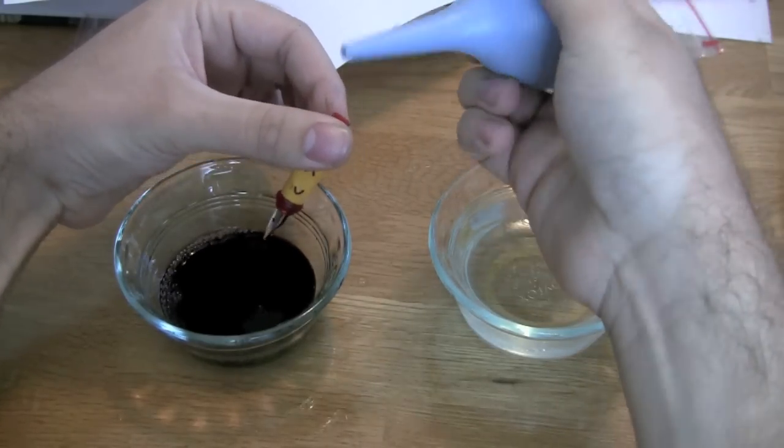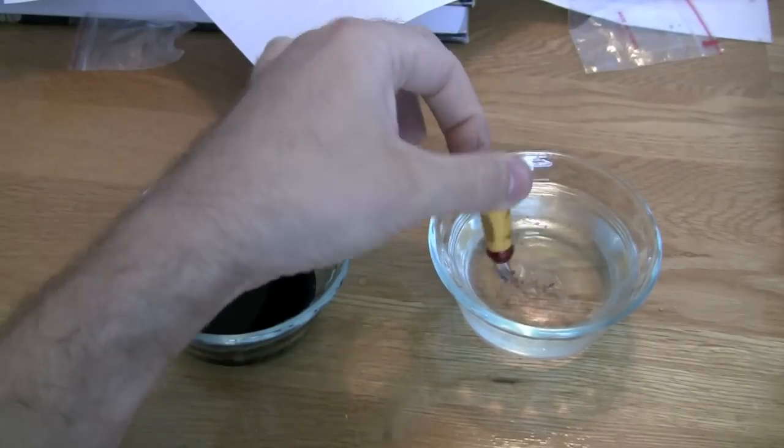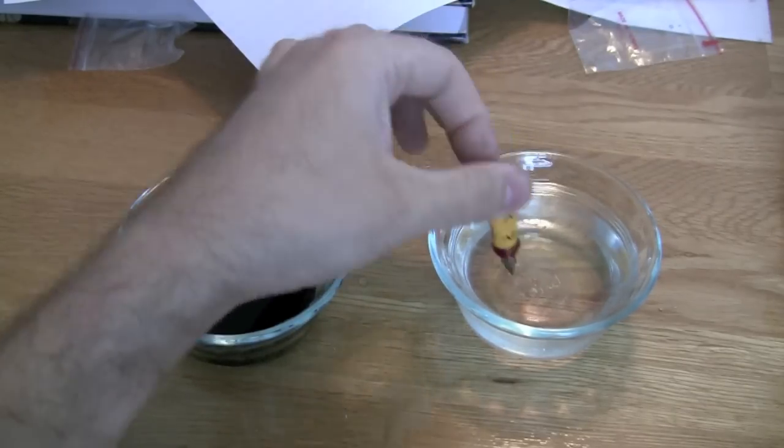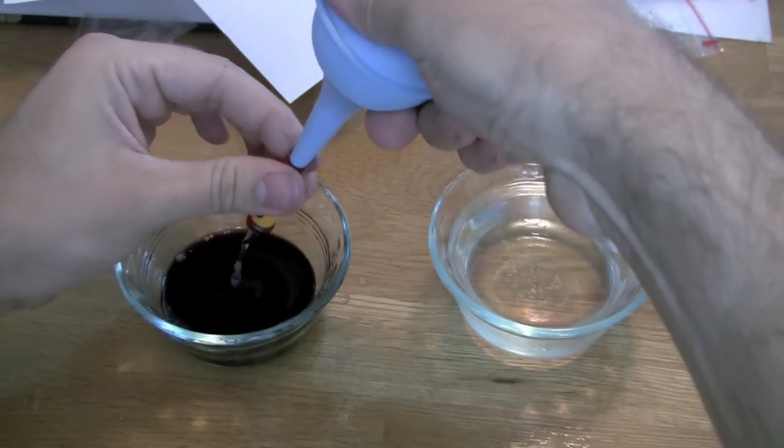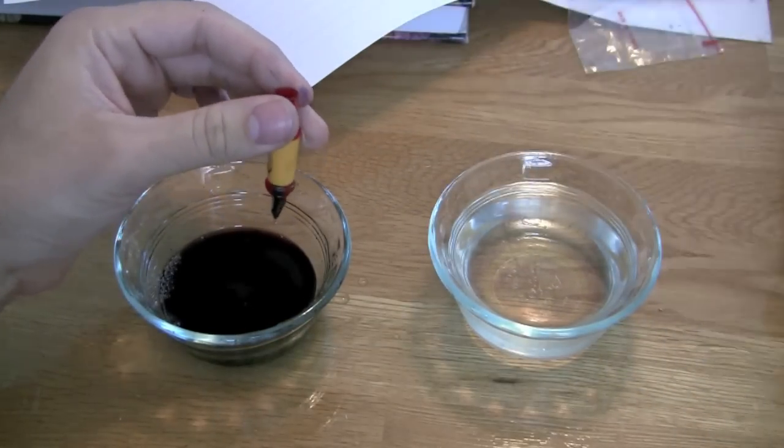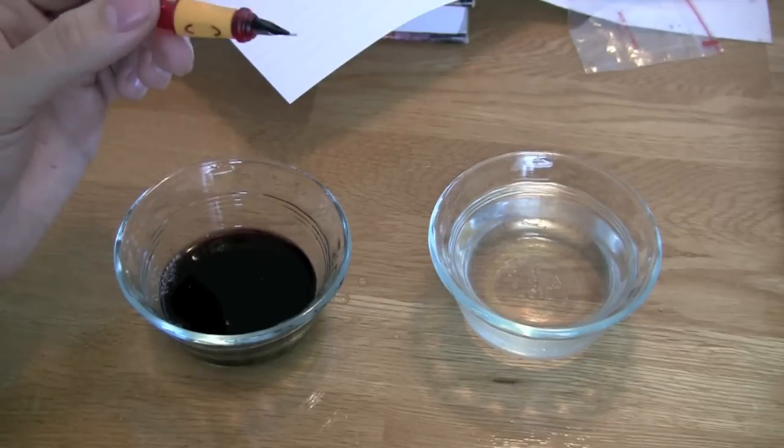Now you still might have a little bit on the nib, so you can take and just kind of dip that in the water, get that out. But you can see how you can still have water left in there. There you go. And then this thing is completely clean.